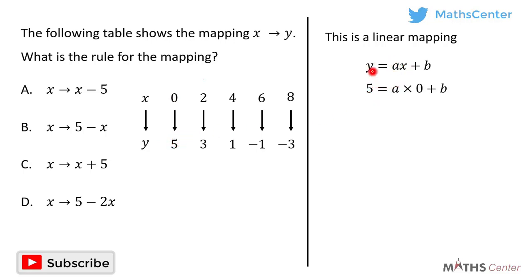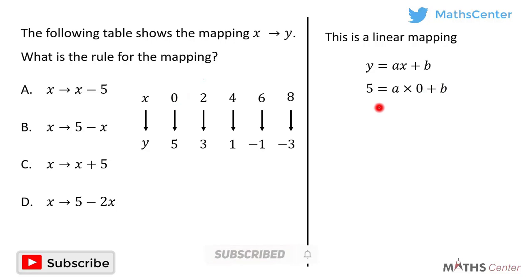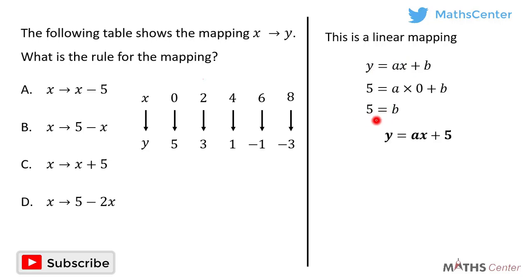When x is equal to 0 and y is equal to 5, substituting into the equation gives us 5 is equal to a times 0 plus b. A times 0 gives us 0, so we have 5 is equal to b. Our rule is y equals ax plus b, and we have found that b is 5, so we can replace b with 5: y is equal to ax plus 5.